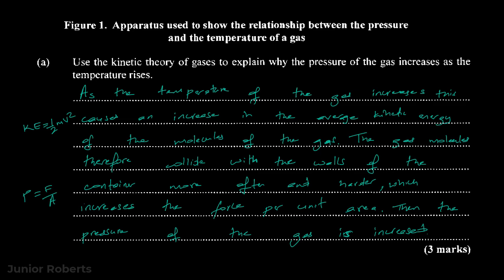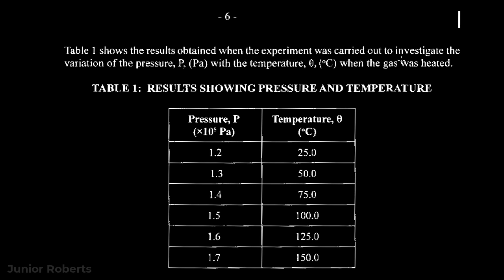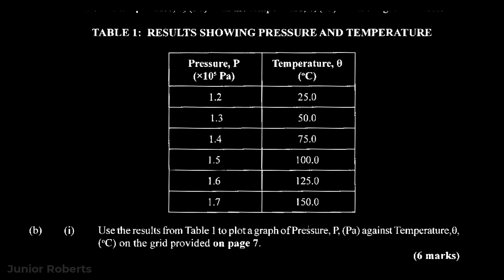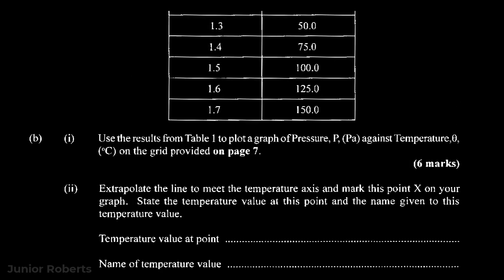Table one shows the results obtained when the experiment was carried out to investigate the variation of pressure P in pascals with temperature in degrees Celsius when the gas was heated. We are to use the results from table one to plot a graph of pressure against temperature. When drawing up our axes, we're going to draw them in such a way that we can have both positive and negative values for temperature. Let's go to the graph paper and look at that.